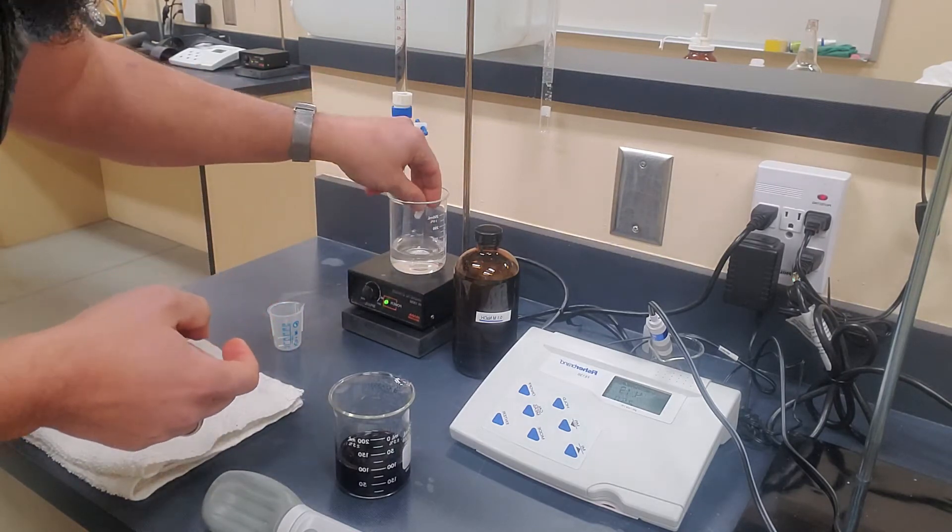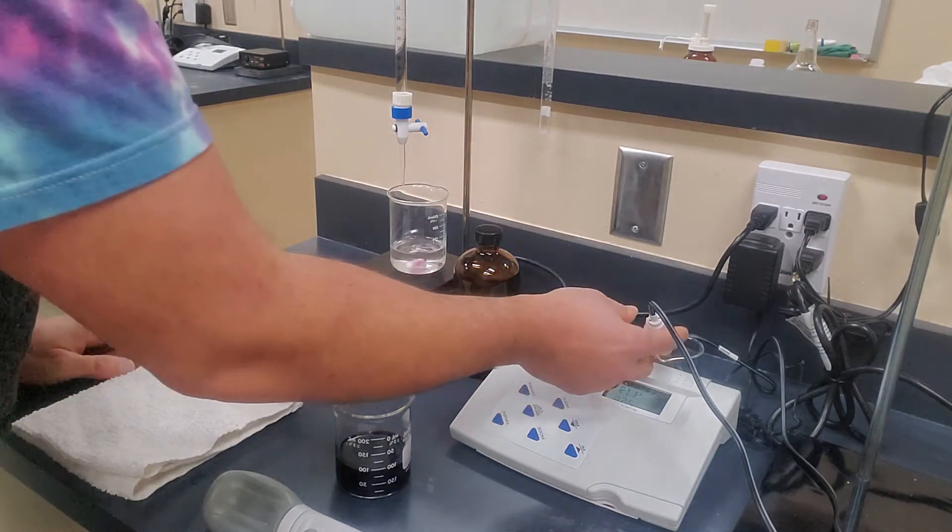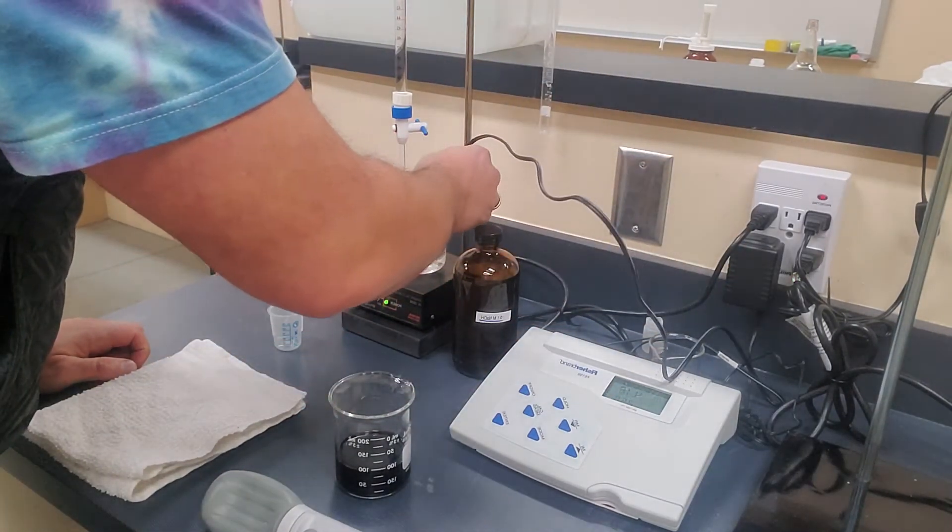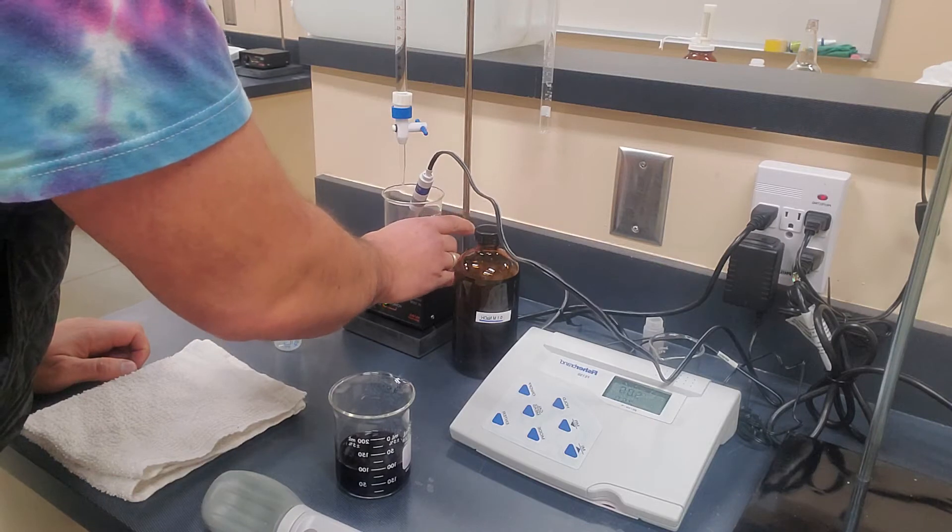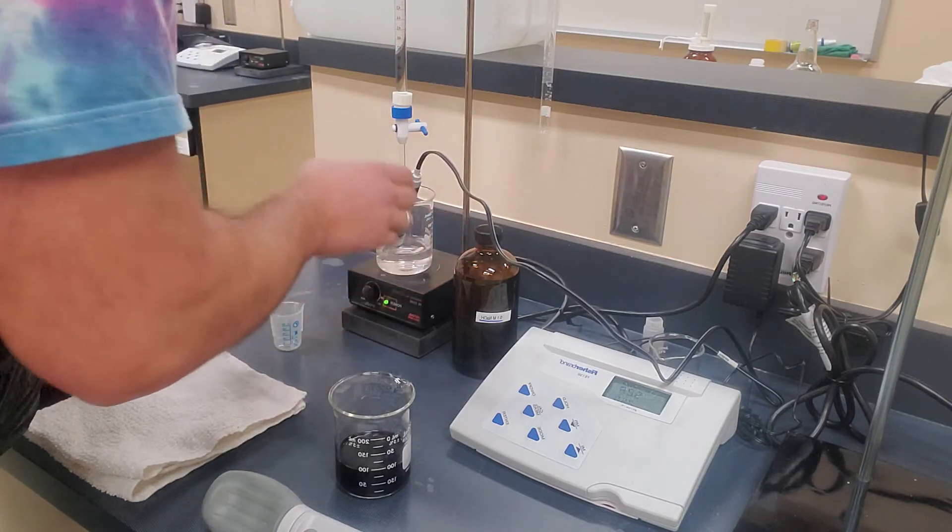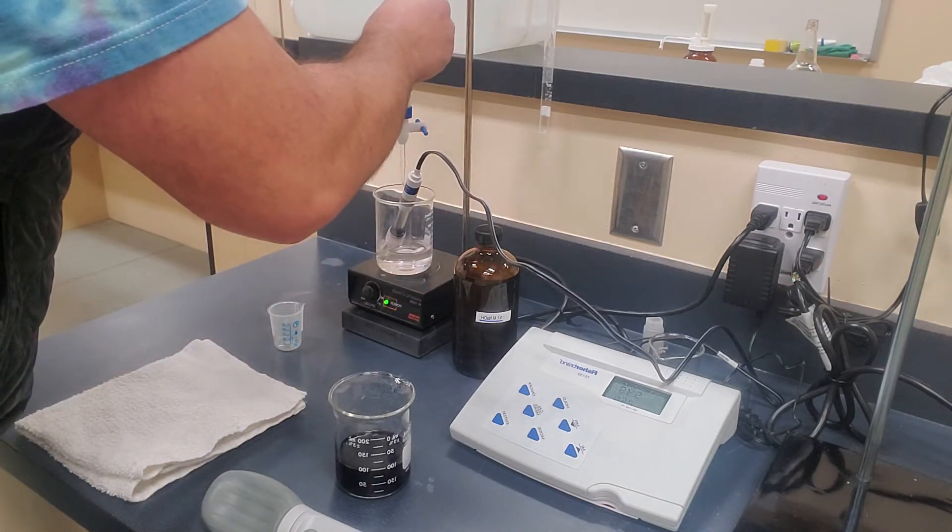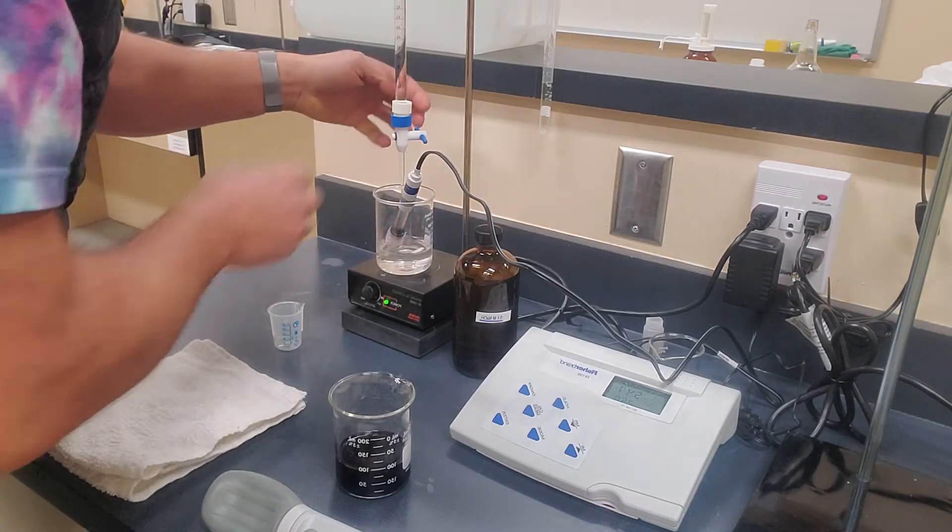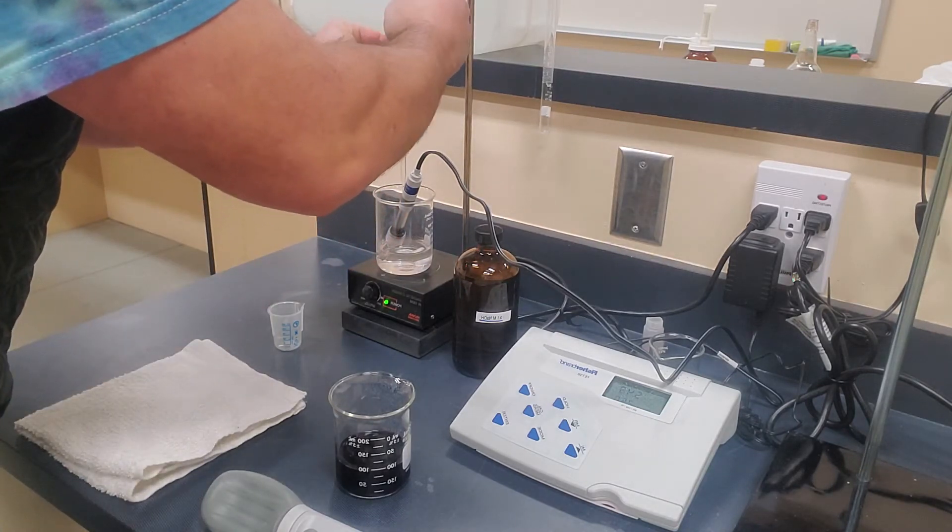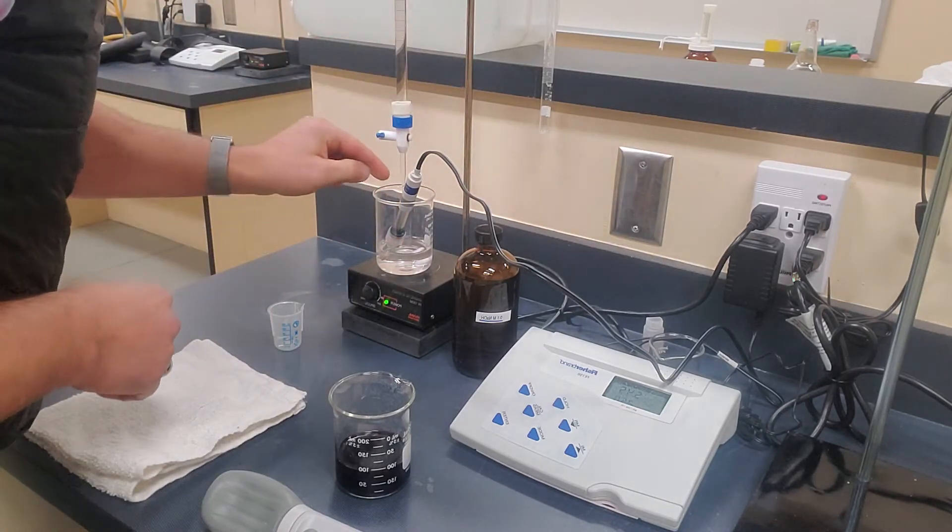We'll add a little stir bar and then we're going to insert our pH probe inside of that container and make sure that it's all nice and lined up so that the burette is facing the water.